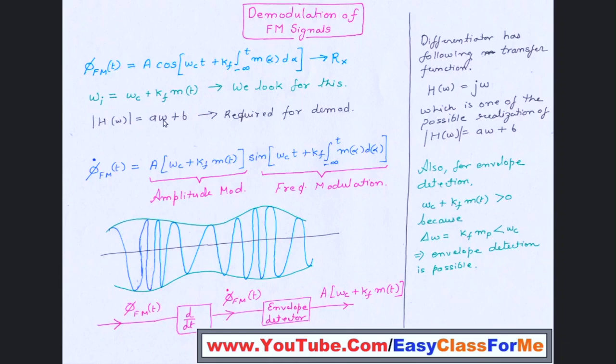So whatever is the frequency in the signal, it will be multiplied with it after we use this filter. So ω frequency, we will have it from ωc + kf·m(t), means it will have a maximum value, a minimum value.